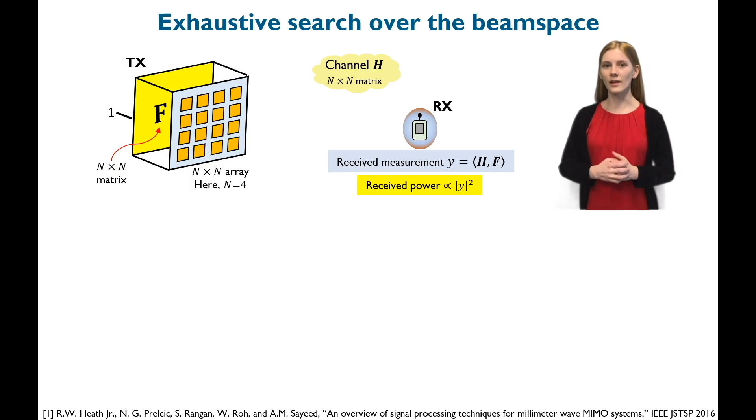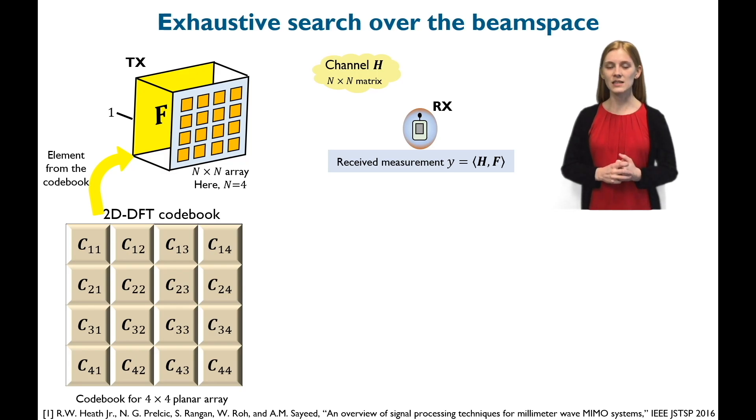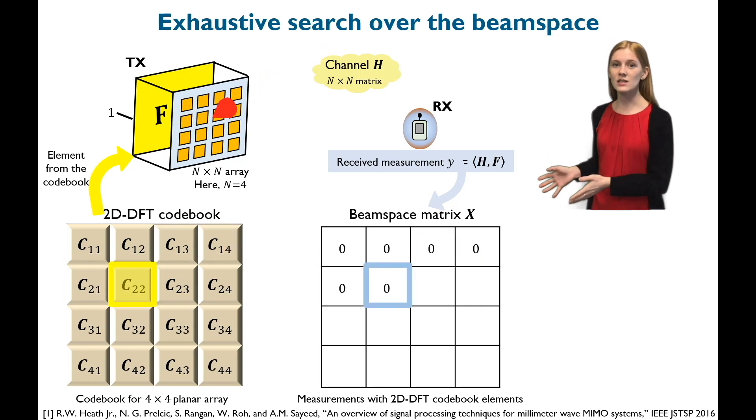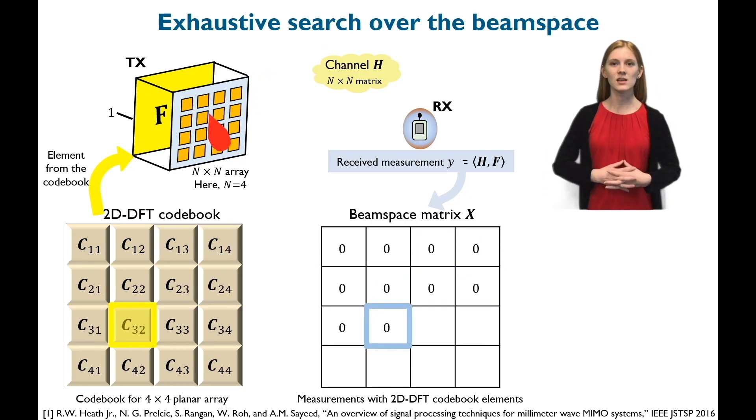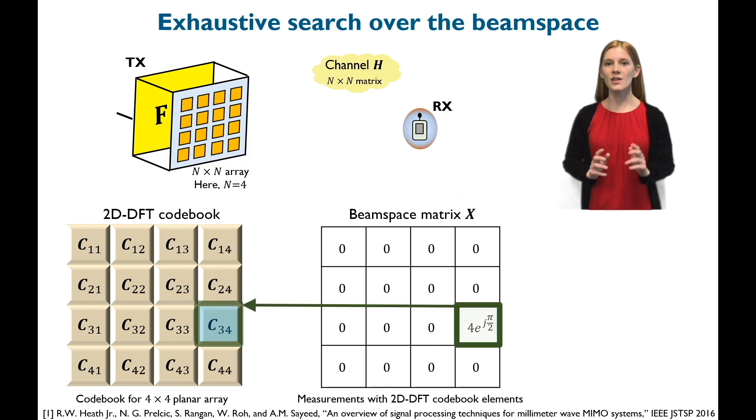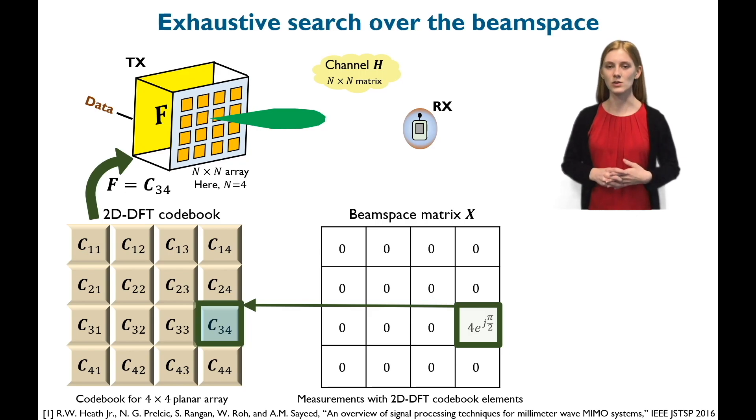A common beam alignment method is 2D DFT-based exhaustive search. In this method, the transmitter applies elements of the 2D DFT codebook in sequence and the receiver obtains entries of the beamspace matrix X. Then the codebook element which results in the strongest entry of X is used for beam alignment.